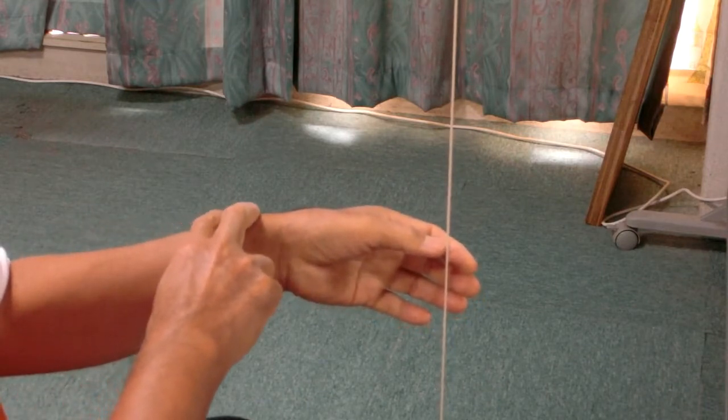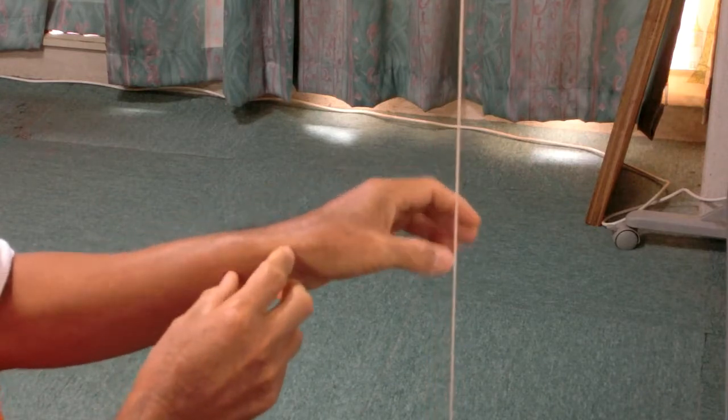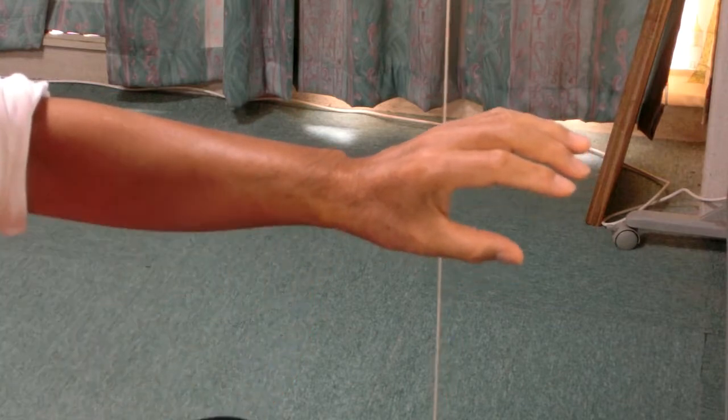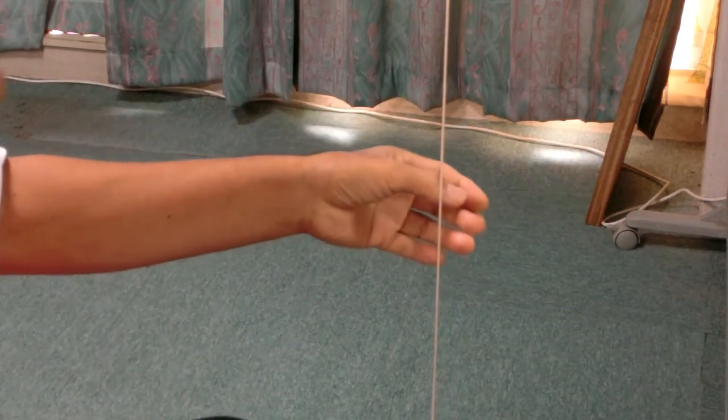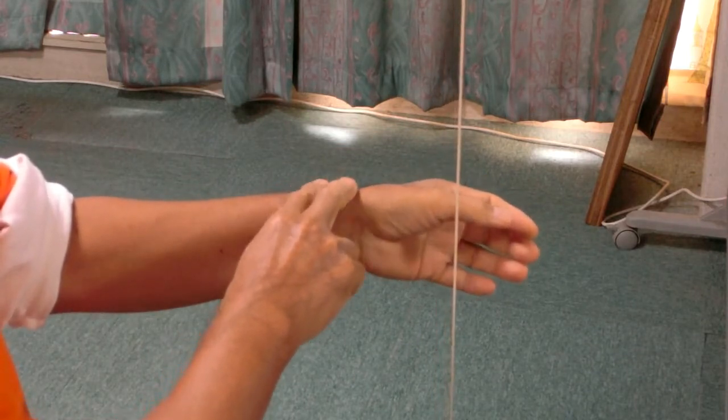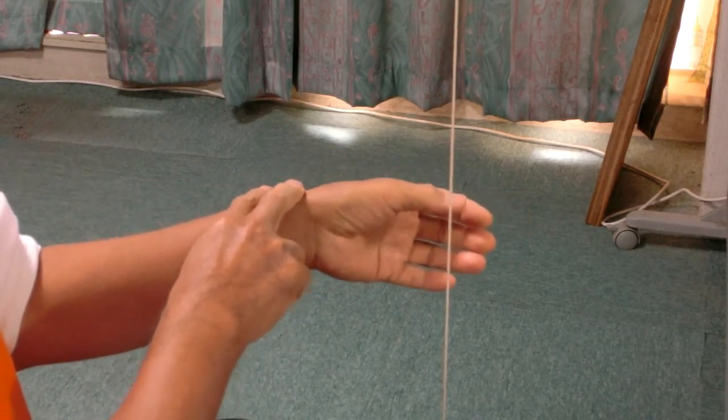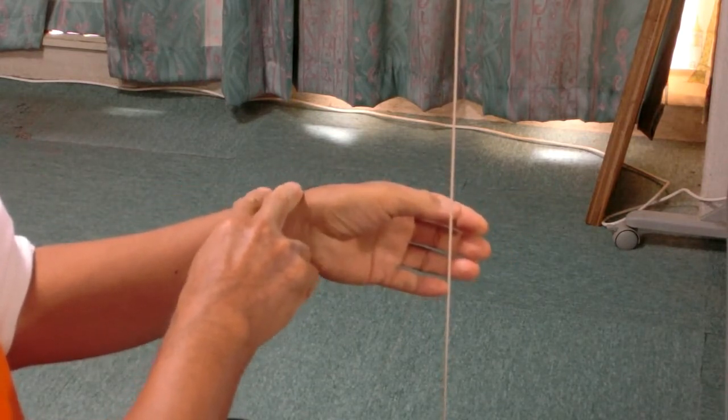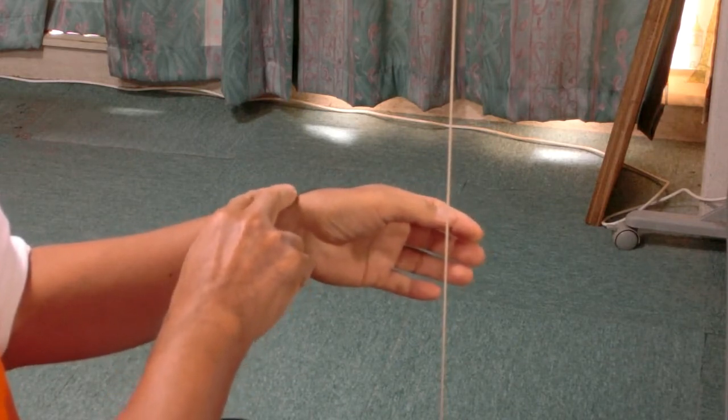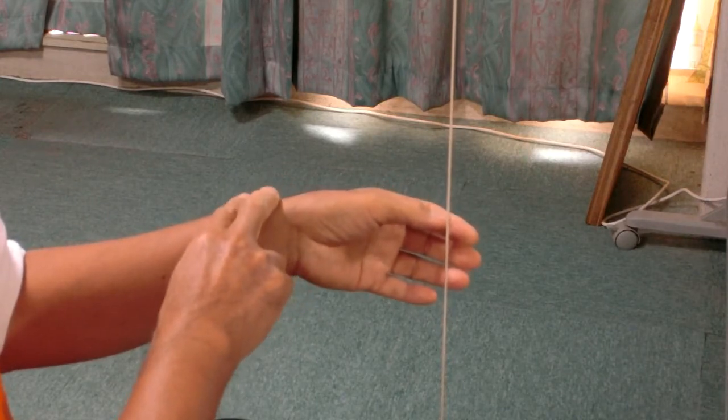Now, feel the sticking bone closest to the wrist. This part of the bone is called the styloid process of the radius. Did you find it? Okay. Now, place the fingers there and keep them attached.